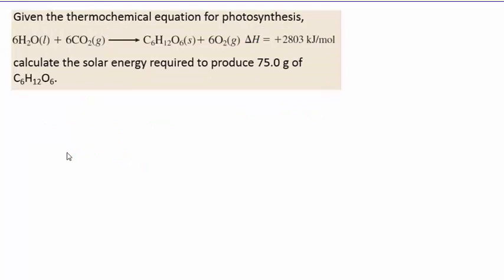This next problem introduces stoichiometry as it relates to thermochemical equations. Stoichiometry from Chapter 3 deals with using the amount of one thing in a chemical reaction to determine the amount of something else, using three steps: convert to moles, multiply by the molar ratio, and convert back to the desired unit. In this problem, one of those things will be the amount of energy, because we write energy as a term in the chemical equation.